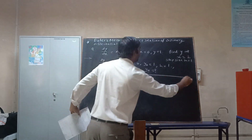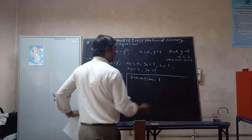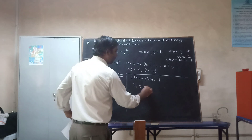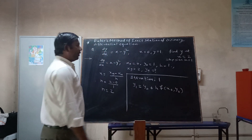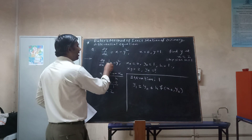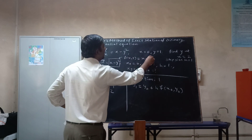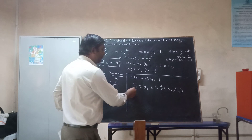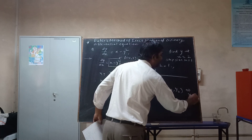In the first iteration, y₁ according to Euler's formula is y₀ plus h times f(x₀, y₀). Here f(x,y) is whatever the right-hand side of dy/dx is, so f(x,y) = x minus y squared.